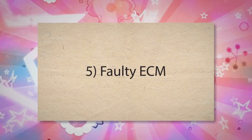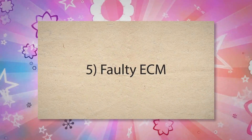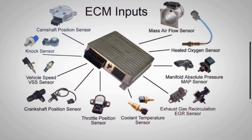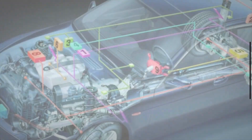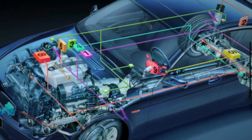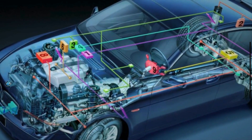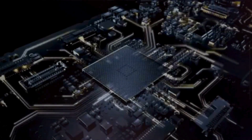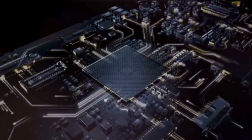5. Faulty engine control module: Although rare, the ECM itself can sometimes be faulty. If the ECM is defective, it may misinterpret the signals from the oil pressure sensor, incorrectly determining that the oil pressure is low, and setting the PO522 code as a result.